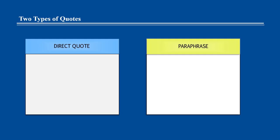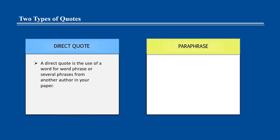There are two different types of in-text citations – a direct quote and a paraphrase. A direct quote is the use of a word-for-word phrase or several phrases from another author in your paper. A paraphrase is an expression of an idea that someone else said in your own words. Each appears in your paper in a different way.